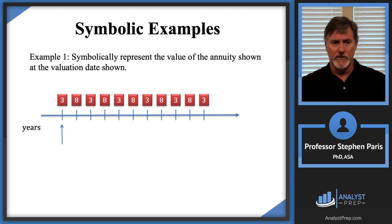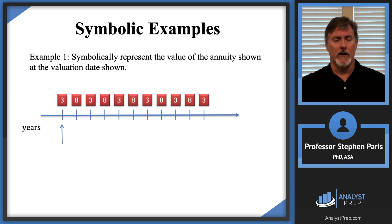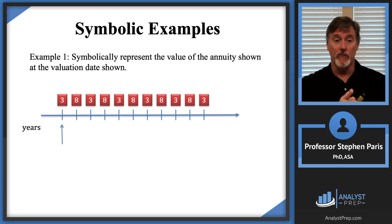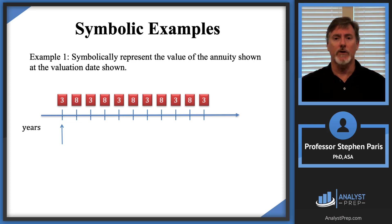I can see that I have annual payments. The timeline is in years. The payments are not level — they're three and then eight and then three and then eight, so there's a pattern but they're not level. I want to value this annuity at the valuation date, which is at the time of the first payment — implied to be immediately just before that first payment of three. A natural thing for students to do, and natural for me also, is to view this as two different annuities.